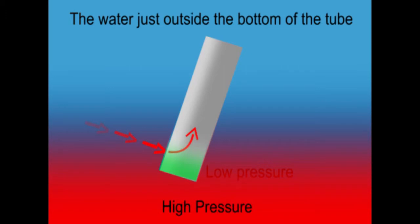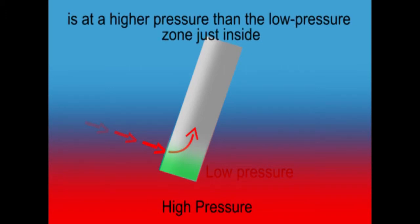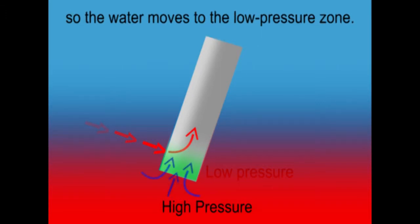The water just outside the bottom of the tube is at a higher pressure than the low pressure zone just inside, so the water moves to the lower pressure zone.